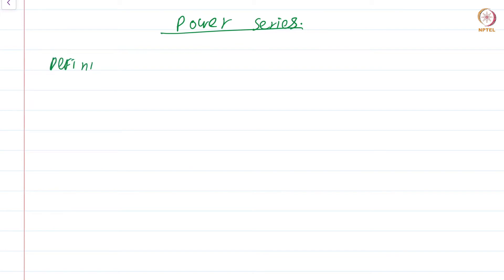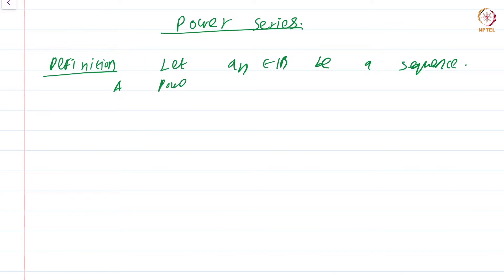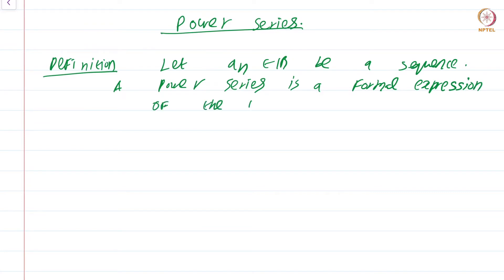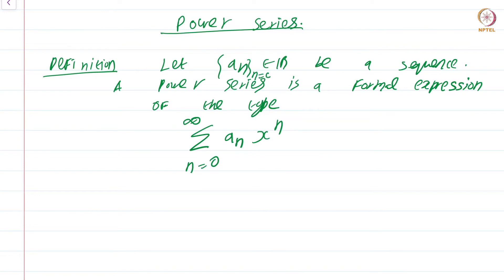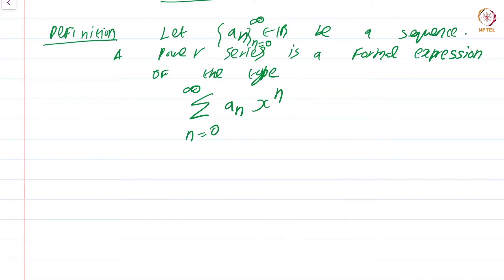Definition: Let {aₙ} in ℝ be a sequence. A power series is a formal expression of the type summation aₙ xⁿ, n running from 0 to infinity. So this sequence aₙ is actually from n equals 0 to infinity — it is a sequence starting at term 0.